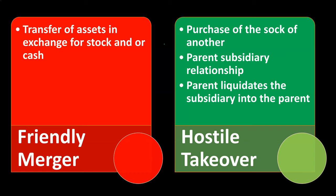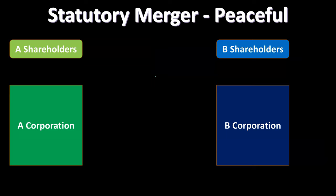Once you have a controlling interest, you have a parent-subsidiary relationship. If the objective is to then liquidate the subsidiary, you have that controlling interest and therefore the authority and power to go through the liquidation process, resulting in a merged company. The friendly merger involves management negotiation, while the hostile takeover bypasses management by going directly to shareholders and purchasing over 51% with the intention of dissolving the subsidiary into the parent, resulting in one merged company.